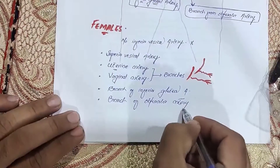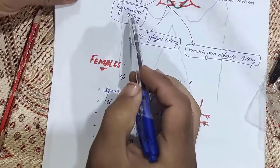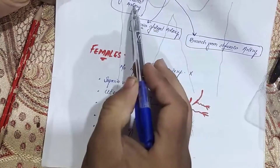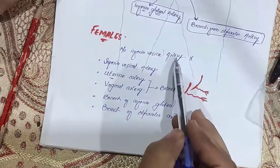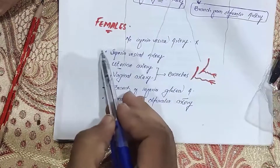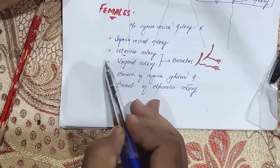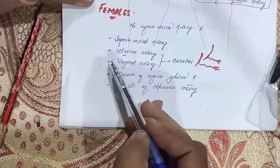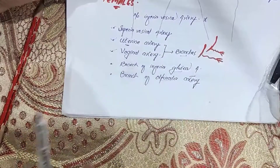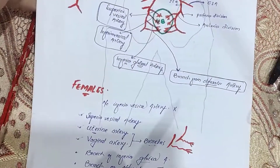So the difference between males and females: in females there is no inferior vesical artery; instead there are uterine and vaginal arteries. But superior vesical arteries are present in both. The branches of the inferior gluteal artery and obturator artery also supply blood to the urinary bladder in both sexes.